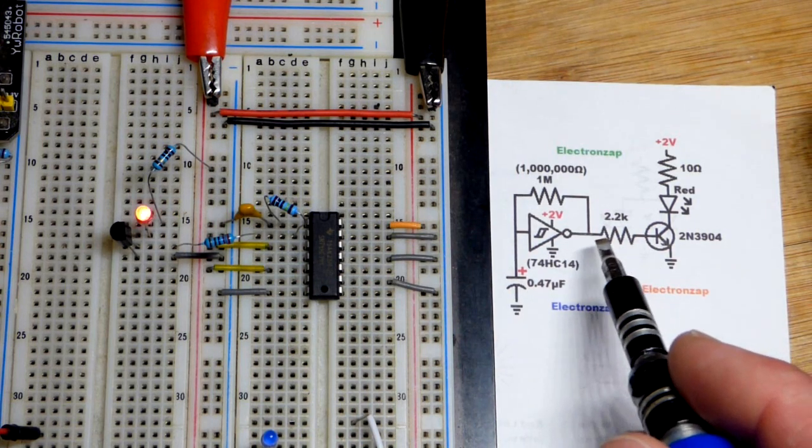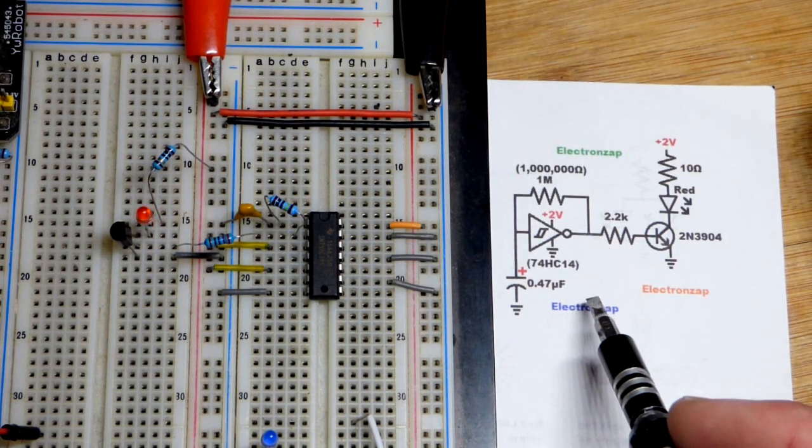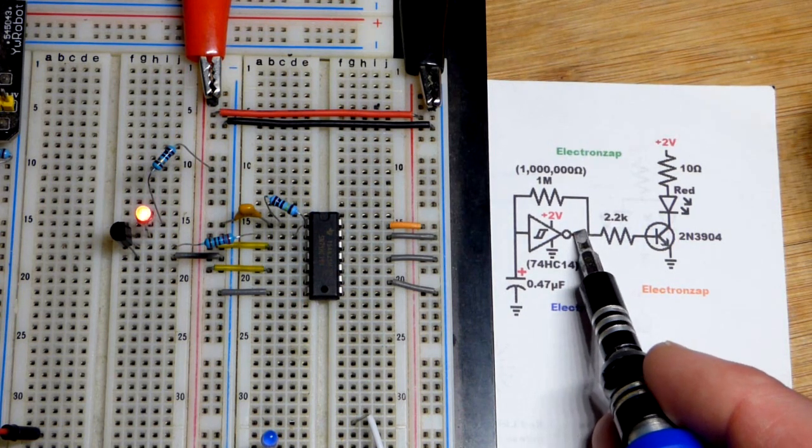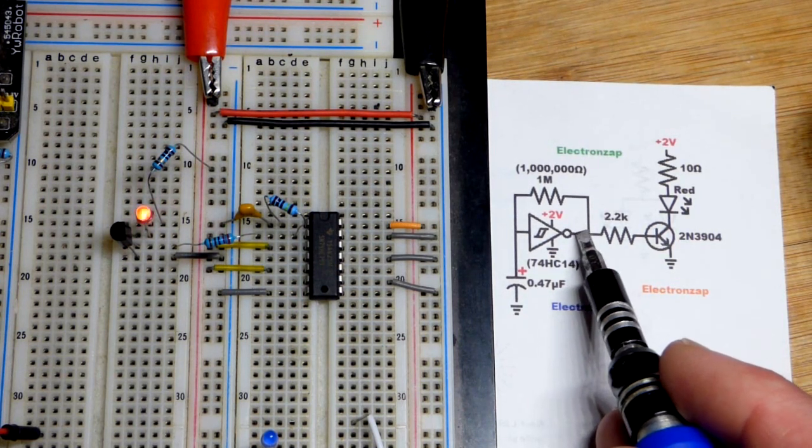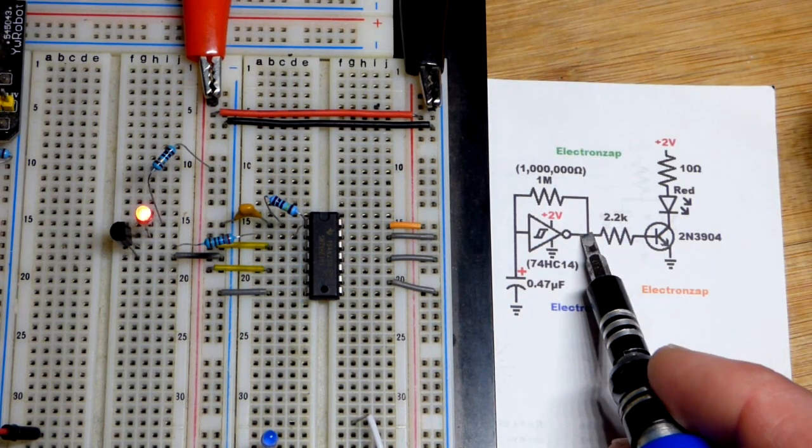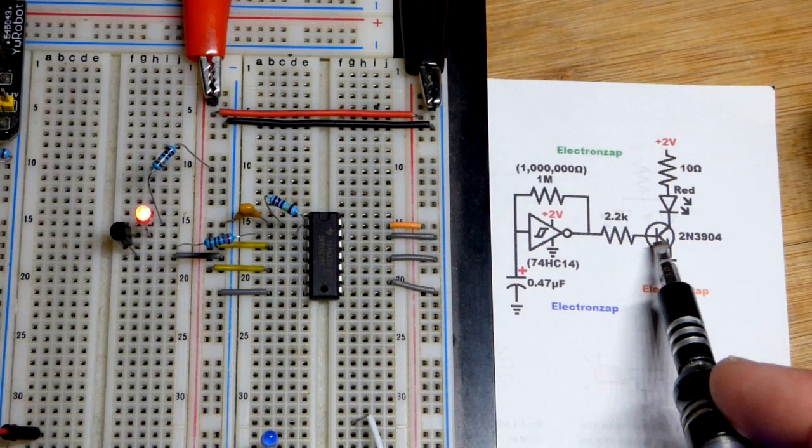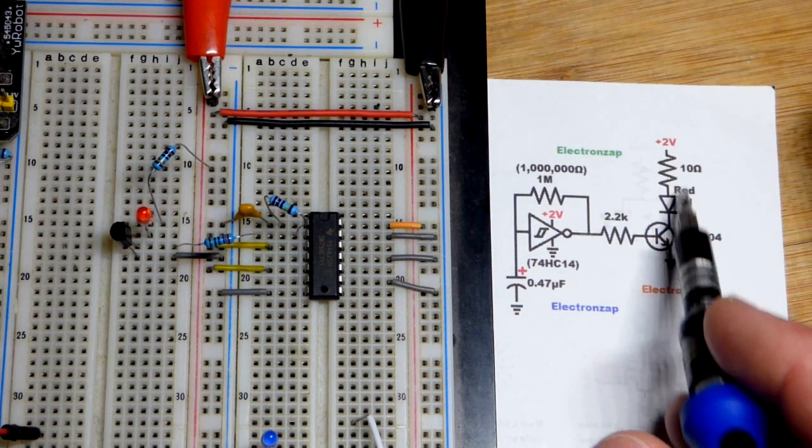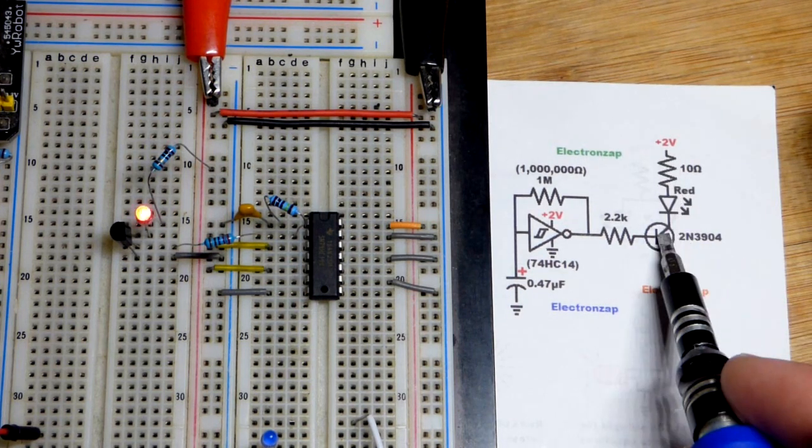But since we are not powering it directly with the output because the output has limitations, instead we need less current to control a transistor. So hopefully that is keeping the output voltage more true and also getting more voltage across the LED.